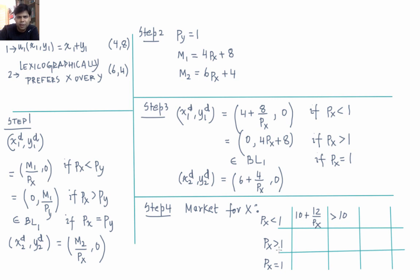When px > 1, individual 1 demands 0 units of x and individual 2 demands 6 + 4/px units of x. So aggregate demand for x is 6 + 4/px. Since px > 1, 4/px is less than 4, so this sum is always less than 10. We do not have an equilibrium when px > 1 either.